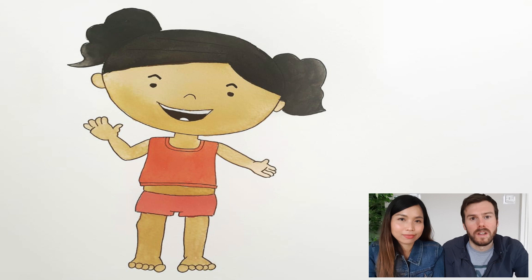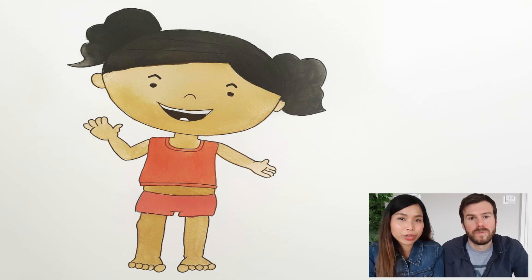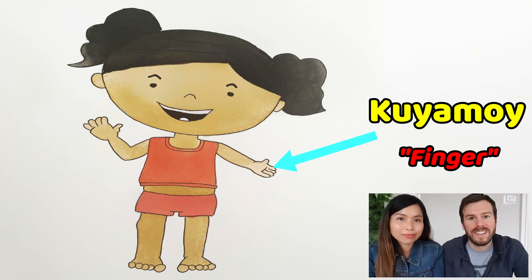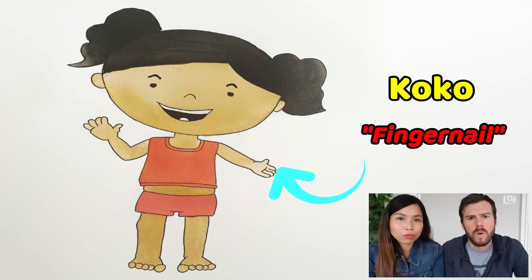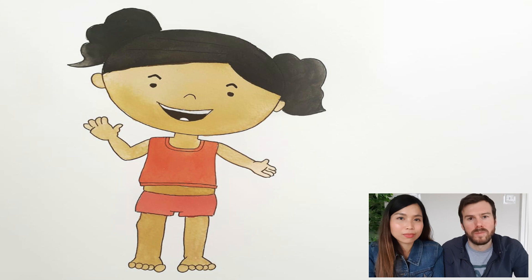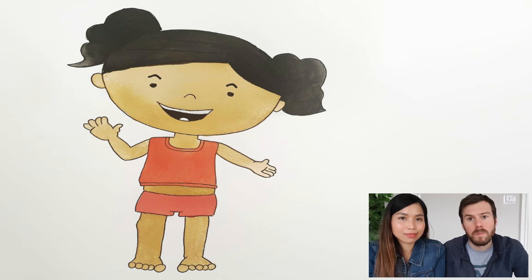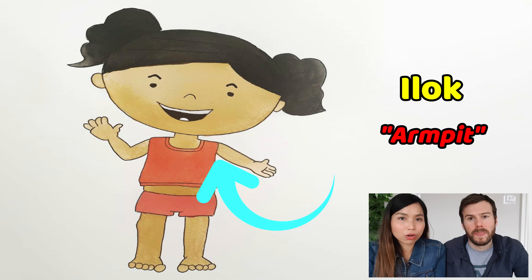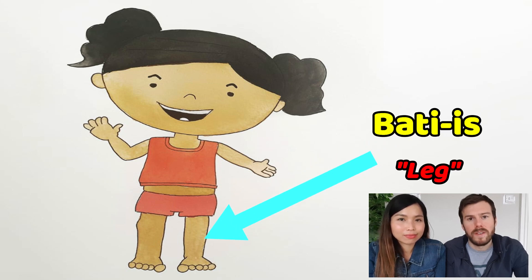And then we move down to her hand, which is kamut. Word for hand is kamut. And then fingers — kuyamoi. Fingers is kuyamoi. And then the fingernails — kukko. So the nails are kukko. We also have the elbow — siko. Elbow is siko. Next we have the word for armpit, which is ilok. Next we have the word for leg, which is batiis. The word for leg is batiis.